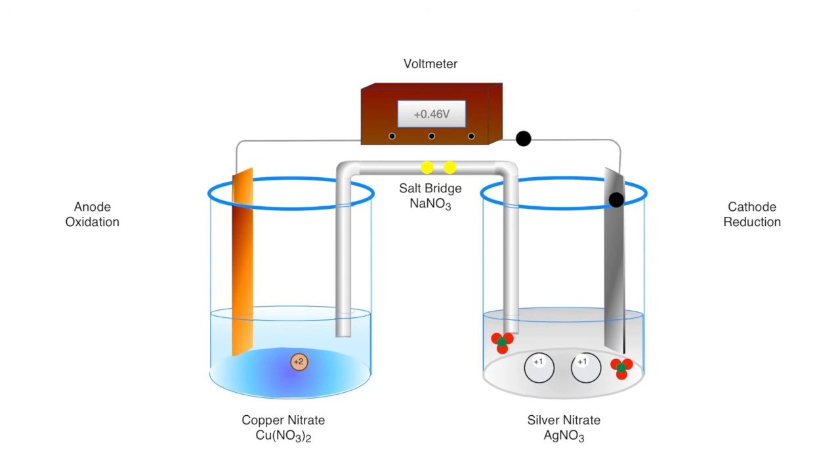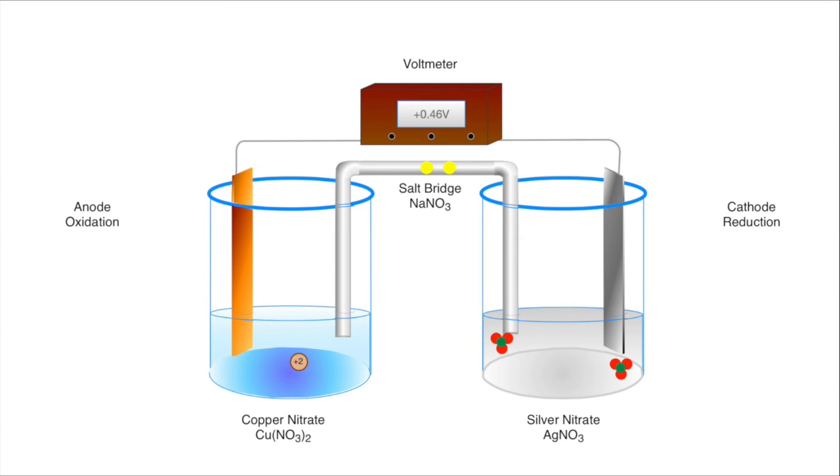When they reach the silver electrode, they attract silver ions from the solution and bond with the ions, forming solid silver that is deposited on the silver electrode. The current flow of electrons leaves excess positive charge as copper ions in the copper nitrate solution and removes positive charges in the silver nitrate solution.